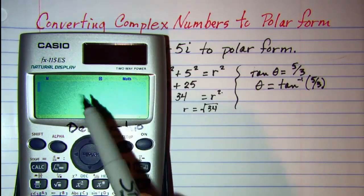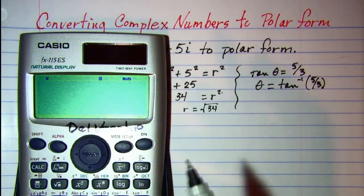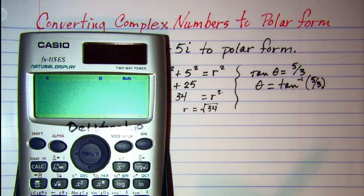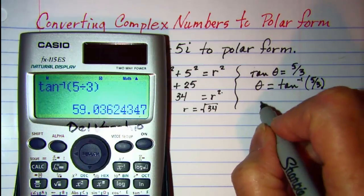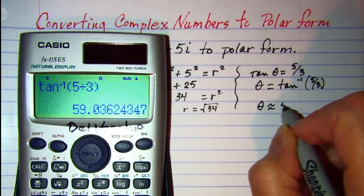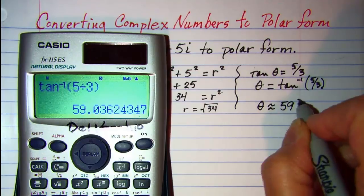Make sure we're in degrees. So arc tan 5 divided by 3 looks like theta is 59 degrees.